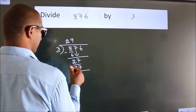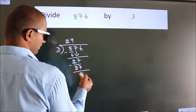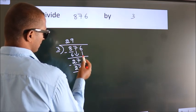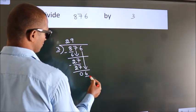we subtract and get zero. After this, bring down the next number. So 6 comes down, making 6.